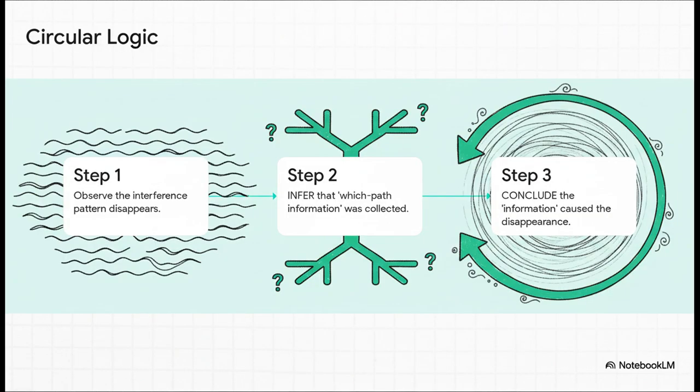Okay, so let's walk through her argument. Step 1. The researchers see the interference pattern go away. Simple observation. Step 2. From that observation, they infer that which path information must have been collected by the atoms. Notice, they don't actually measure this information directly. And then, step 3. They conclude that this information they just inferred is what caused the pattern to disappear. You see the problem? It's like saying, the car stopped because I pressed the brakes. And I know I pressed the brakes because the car stopped. The conclusion is already baked into the premise.